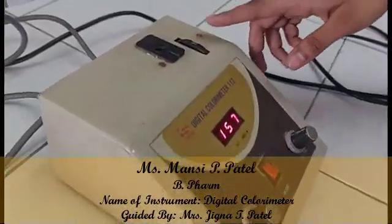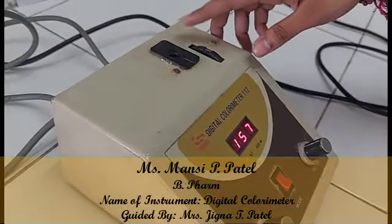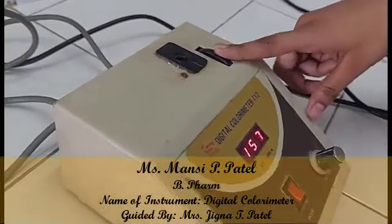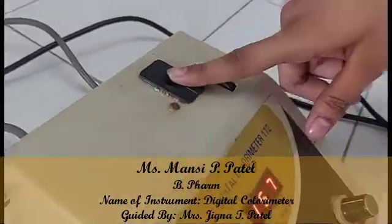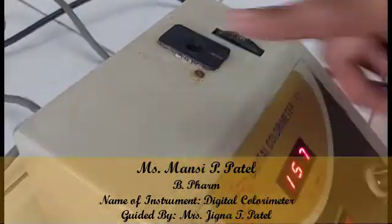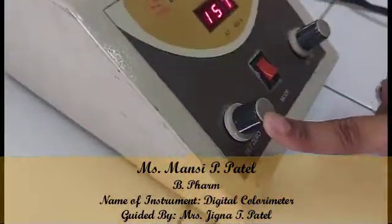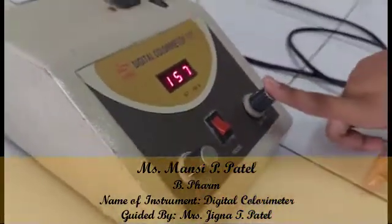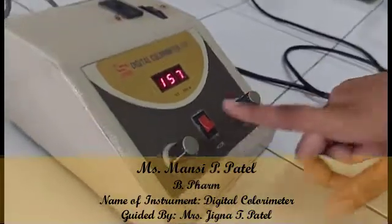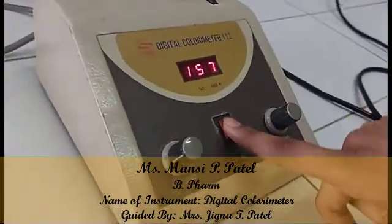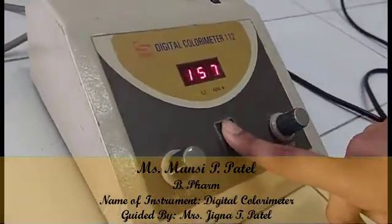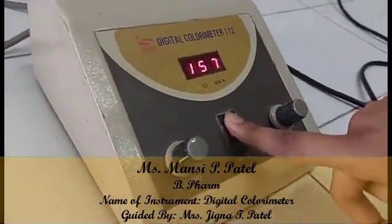Let's see the parts of this instrument. This is the rotating knob, this is the cuvette stand, this is the set 0 knob, this is the set 100 knob, and this is the percentage transmission and absorbance switch.